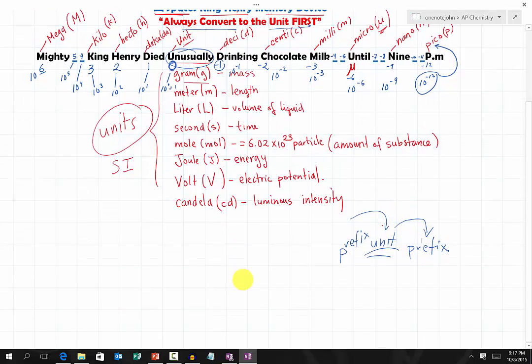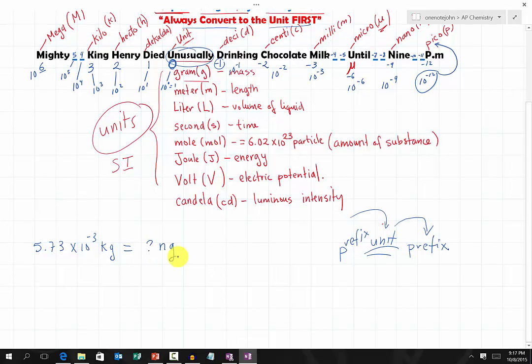Let's look at an example. We have, let's say we have 5.73 times 10 to the negative 3 kilograms. And we want to convert that to nanogram. Now, how do we use this prefix to solve for nanogram?